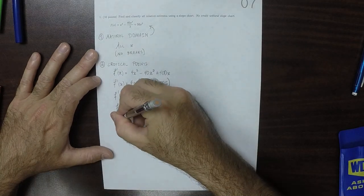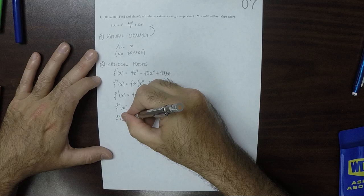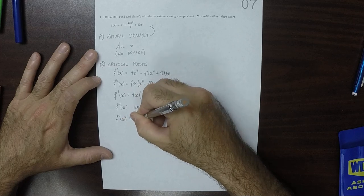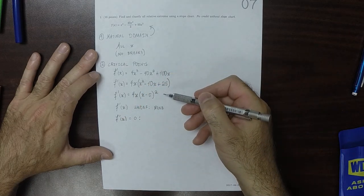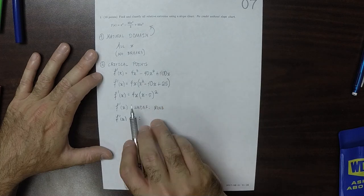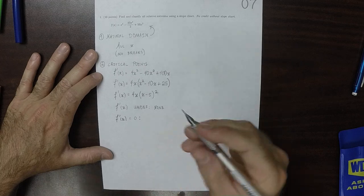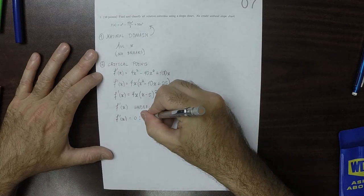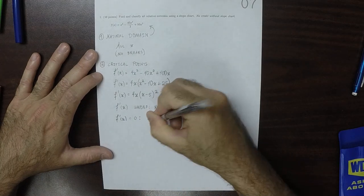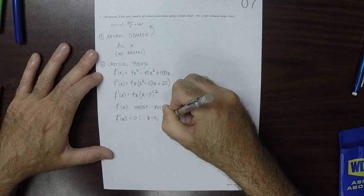And then the second question is, where is the derivative equal to zero? Well, because we simplified it, it's clear that the derivative is equal to zero exactly when x is zero because of that one, or when x is 5 because of that one. So x equal to zero, x equal to 5.